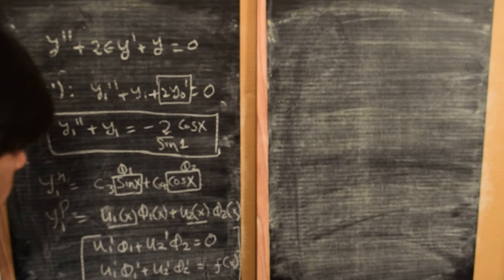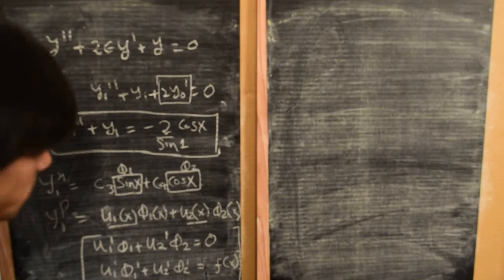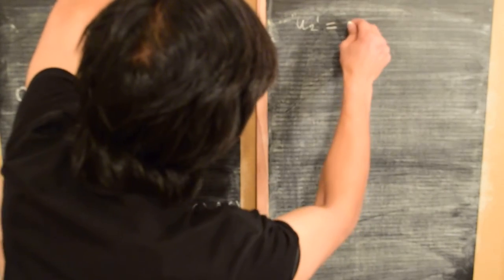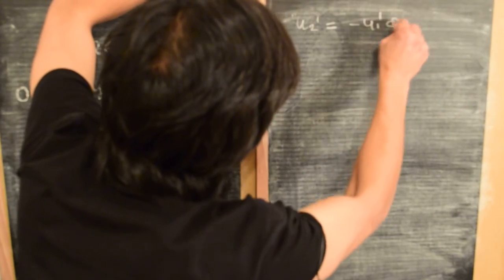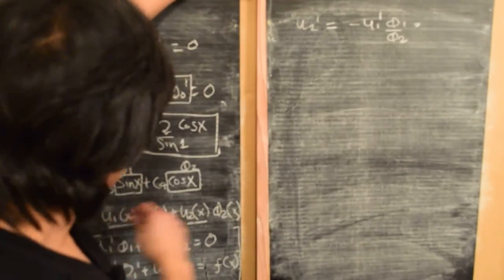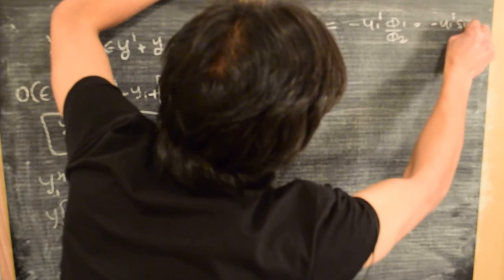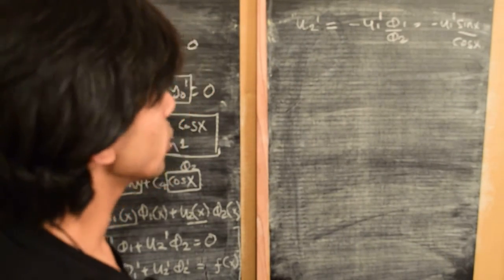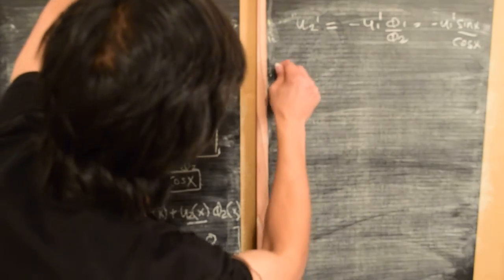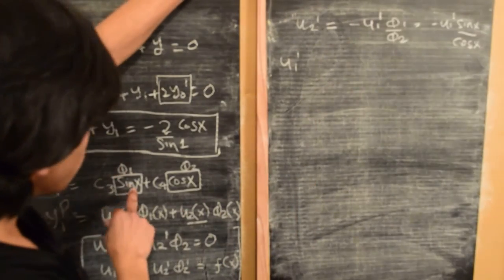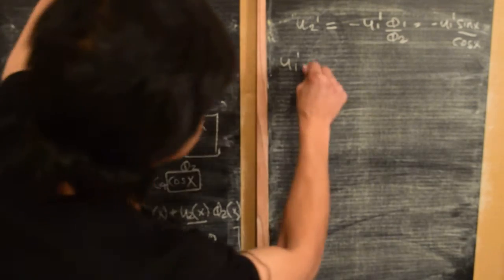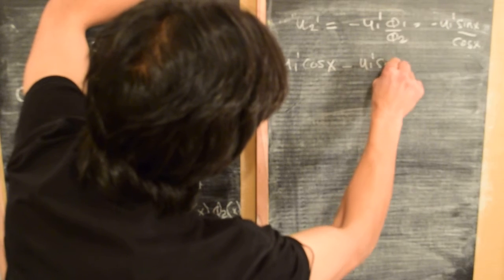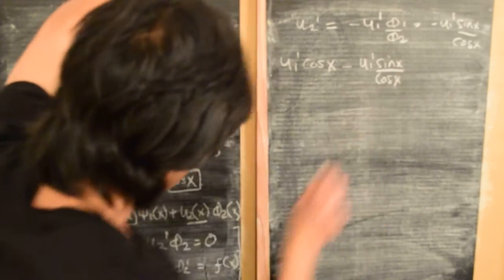Let's get rid of u₂' from the first equation. So u₂' = −u₁'·φ₁/φ₂ = −u₁'·sin(x)/cos(x). Substituting into the second equation: u₁'·cos(x) — since φ₁' = cos(x) — plus u₂'·φ₂' where φ₂' is the derivative of cosine, which is −sin(x).